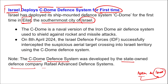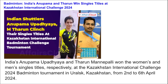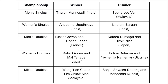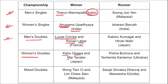In badminton: India's Anupama and Tharun won the singles titles at the Kazakhstan International Challenge 2024. This tournament was held from 2nd to 6th April 2024. Men's singles title was won by Indian badminton player Tharun. Women's singles title was won by Anupama Upadhyaya from India. Men's doubles title was won by Lucas Corvee and Ronan Labar of France. Women's doubles was won by Kaho Osawa and Mayu Tanabe of Japan. Mixed doubles was won by Wong Tien Ci and Lim Shui Xian of Malaysia.